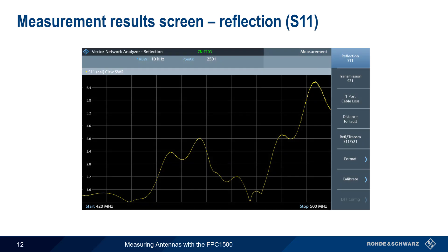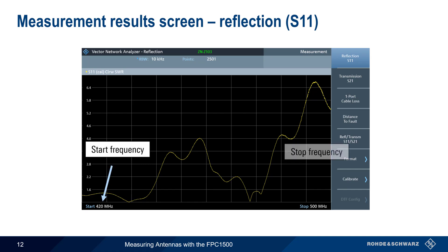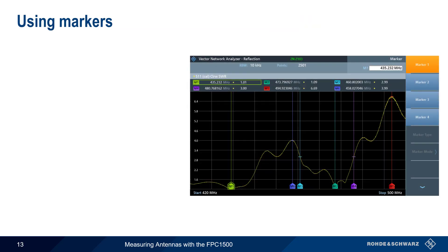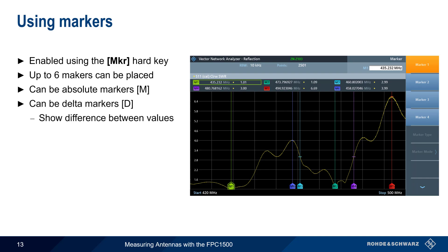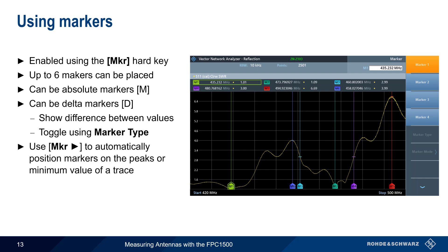Measurements run automatically when the antenna under test is attached. Here's an example of an antenna reflection measurement — in this case, we're looking at SWR as a function of frequency between 420 MHz and 500 MHz. We'll go through some examples of analyzing or measuring the properties of an antenna using a measurement trace. We'll be using markers to get precise numeric values from the graphs, and these are enabled using the Marker hard key. Up to 6 markers can be placed on a trace, and these can either be absolute markers or delta markers, which show the difference between marker values. Another marker hard key is used to automatically place markers on the peak or minimum values of the displayed trace.